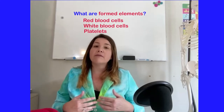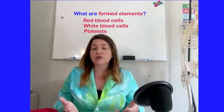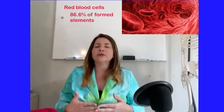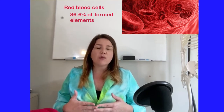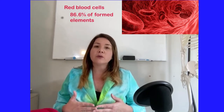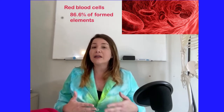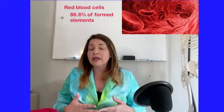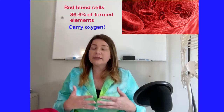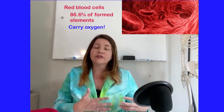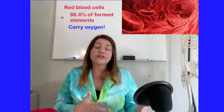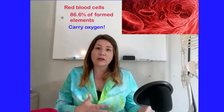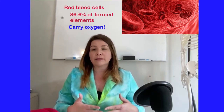Red blood cells make up the most part of blood — about 86.6% of the formed elements. Red blood cells are really important because they carry oxygen all over the body. They actually bind to oxygen and then deliver it to the different cells and tissues that need it. So we need a lot of red blood cells.